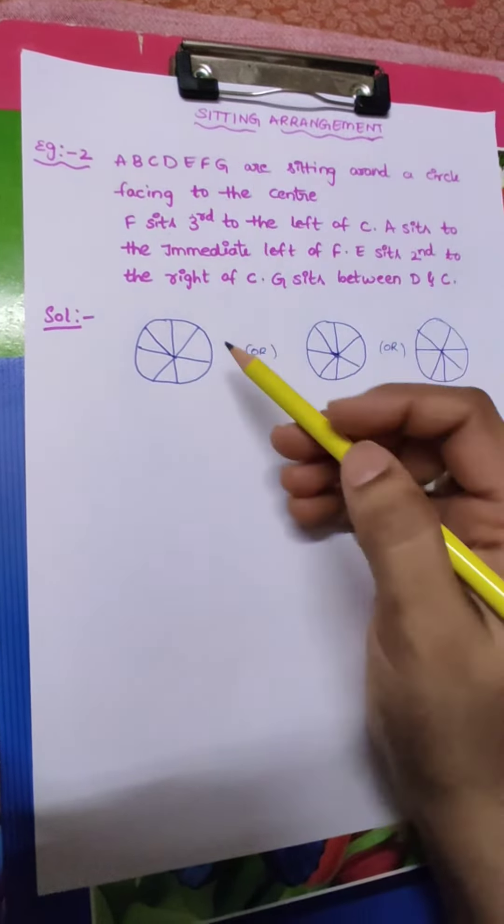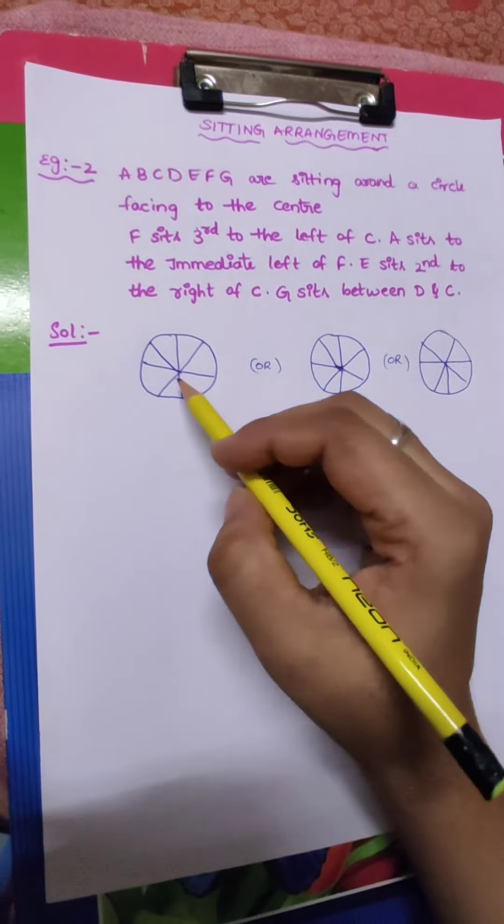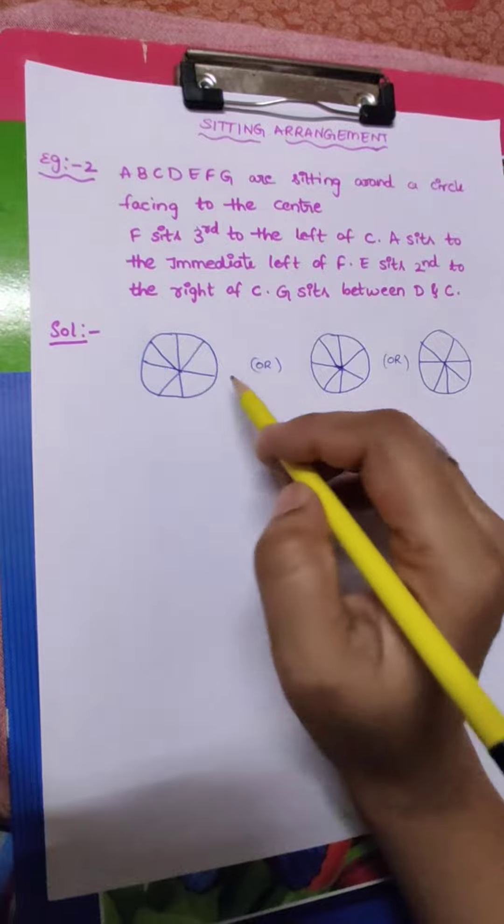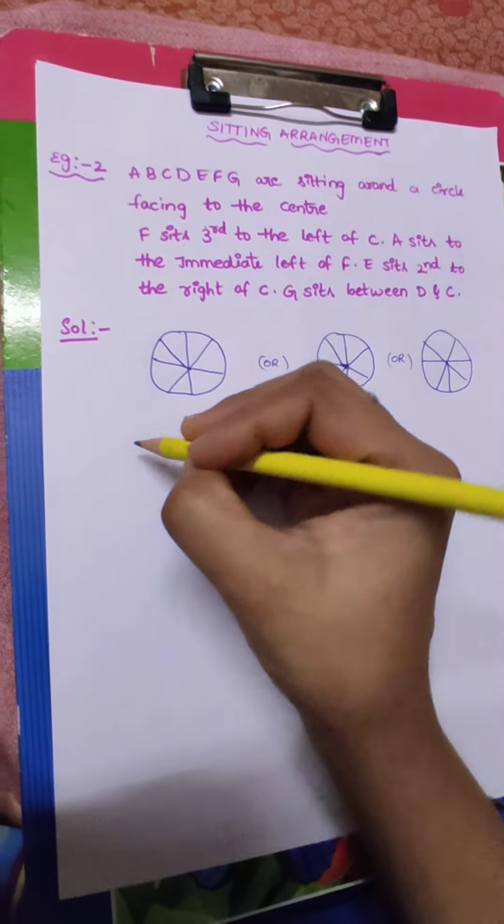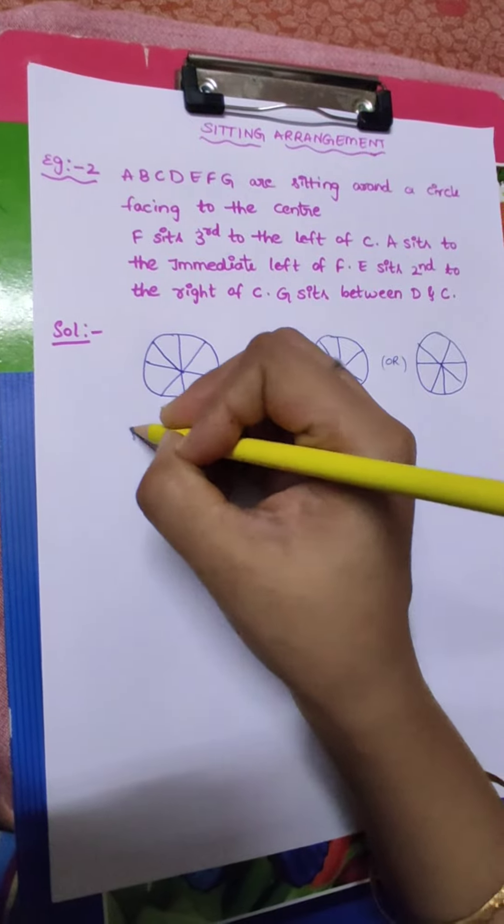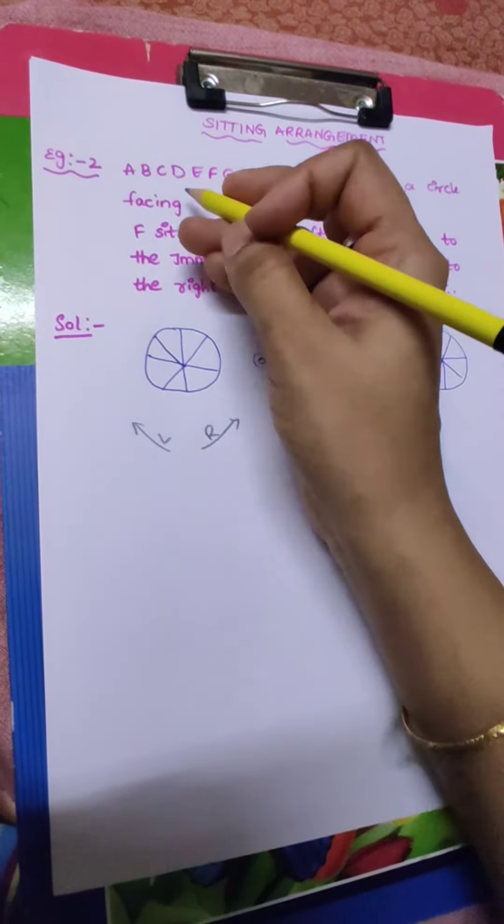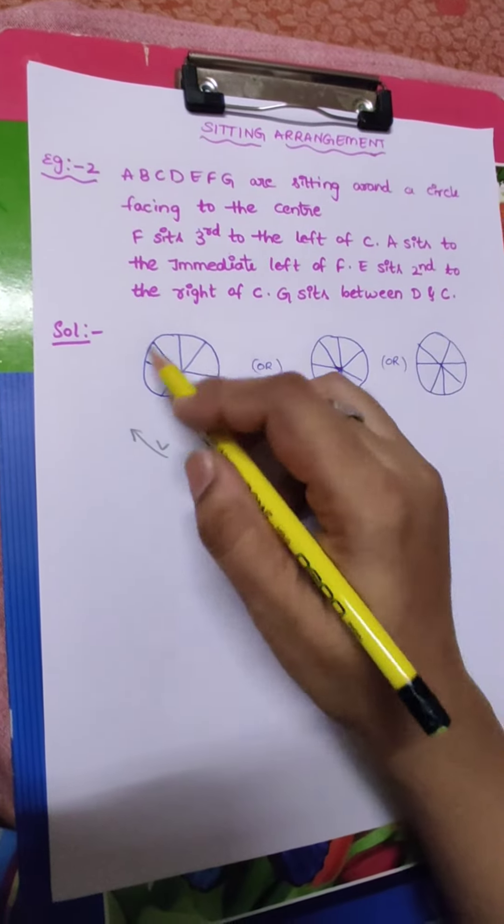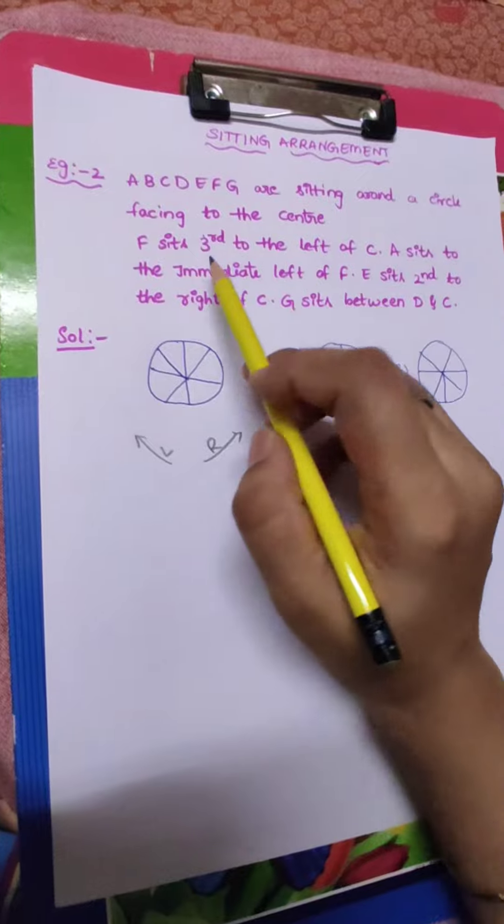How many persons are there here? 7 persons. 7 is an odd number, here we can draw anything. That is why I draw 3 - any one you can draw because odd number. Whenever odd number means we can draw anything, any way we can draw left or right. Why? Because facing to the center. First drawing I am taking for your understanding.